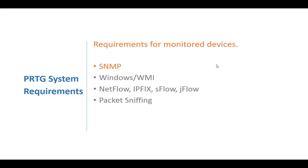For SNMP monitoring, devices must support SNMP version 1, 2c, or version 3, SNMP must be enabled on the device, and the PRTG machine must be allowed access to the SNMP interface. For Windows WMI monitoring, you need a Windows host and client PC — do not use Windows Vista or Windows Server 2008 due to WMI performance issues. For NetFlow/IPFIX/sFlow/jFlow monitoring, devices must be configured to send the appropriate data packets to the PRTG probe. For packet sniffing, only data packets passing through the local machine's network card can be analyzed; monitoring ports on switches are necessary for network-wide monitoring.